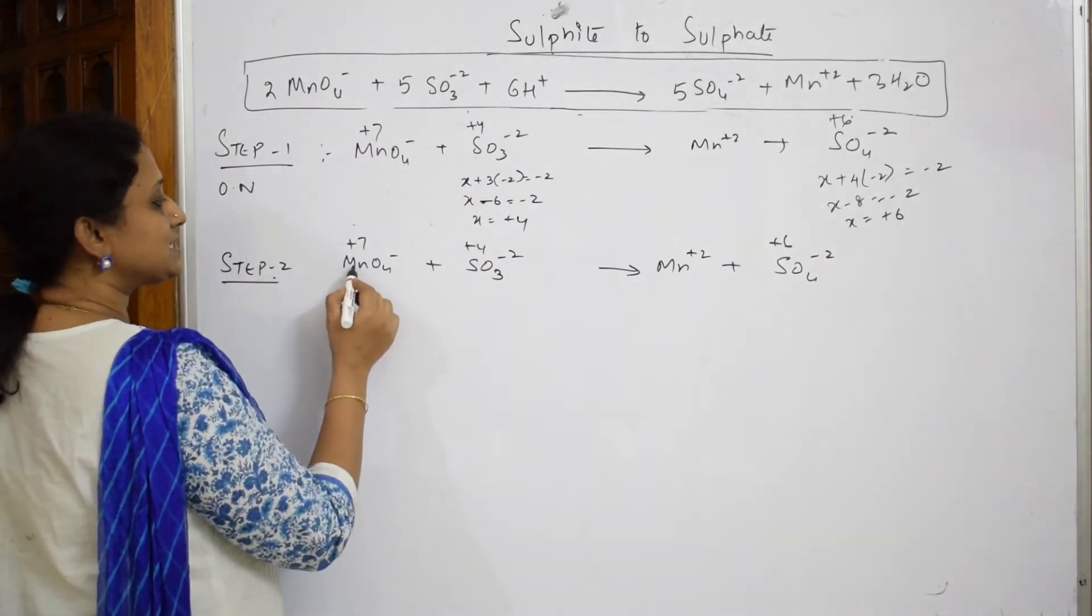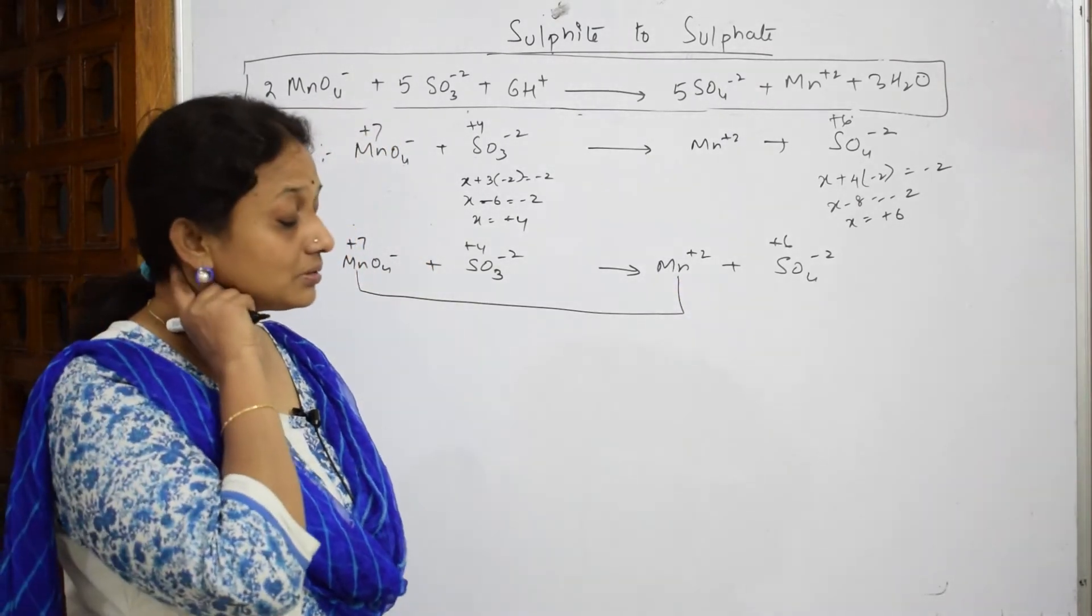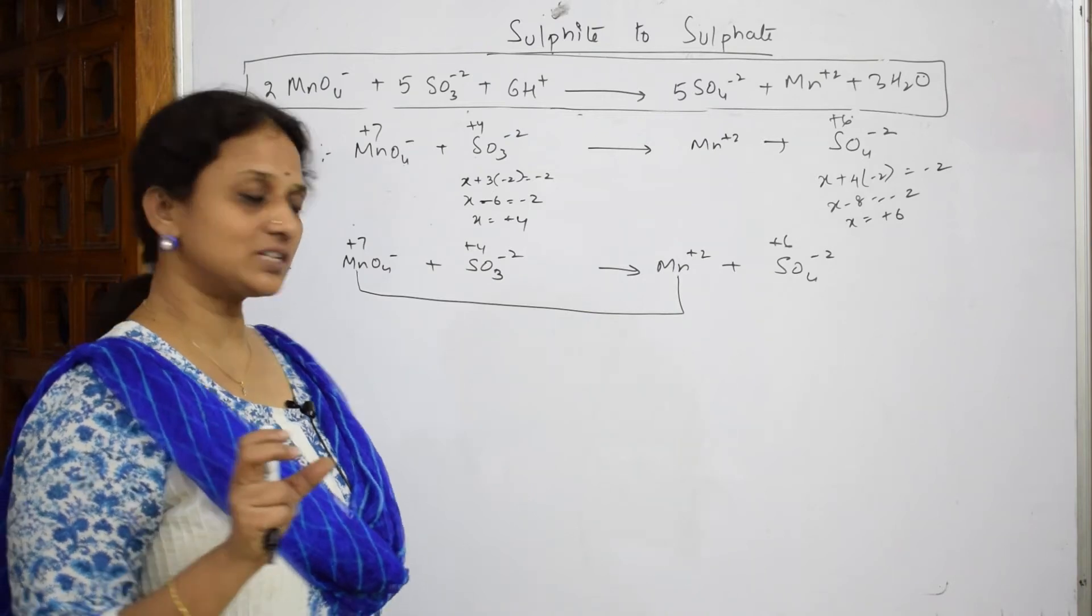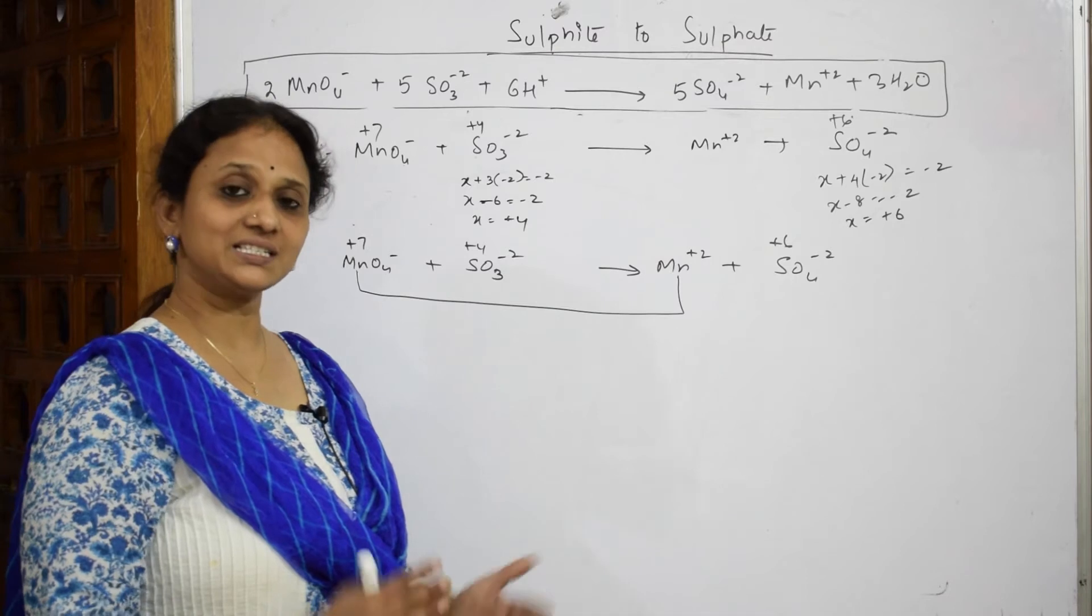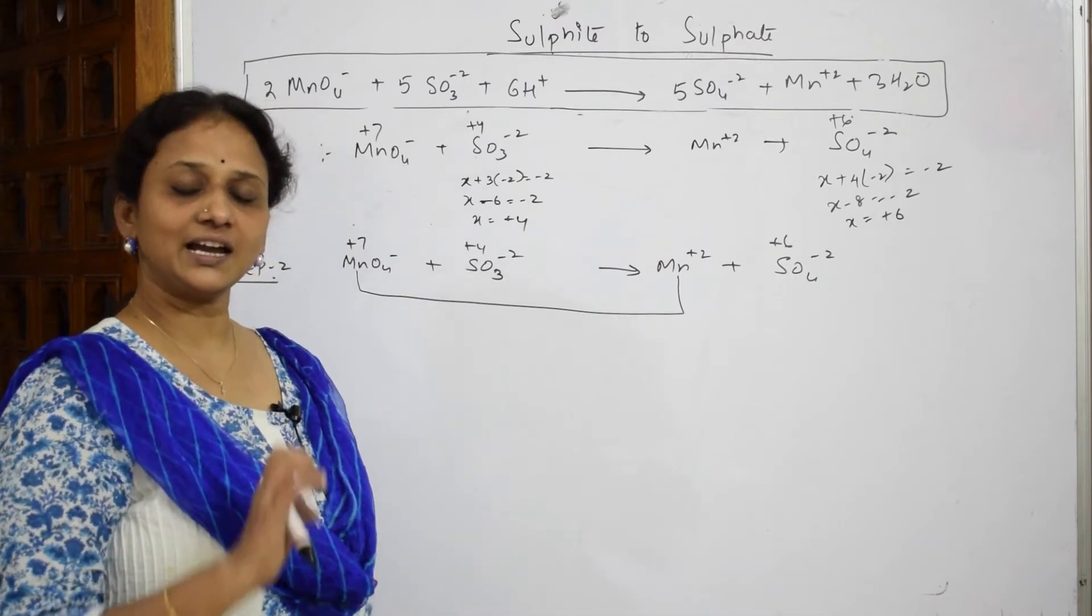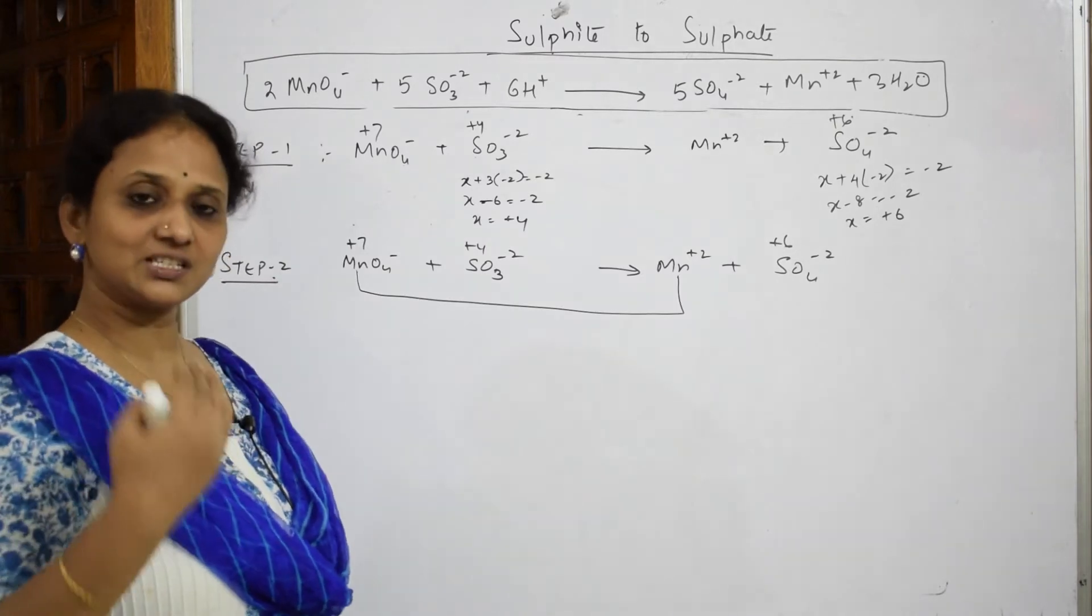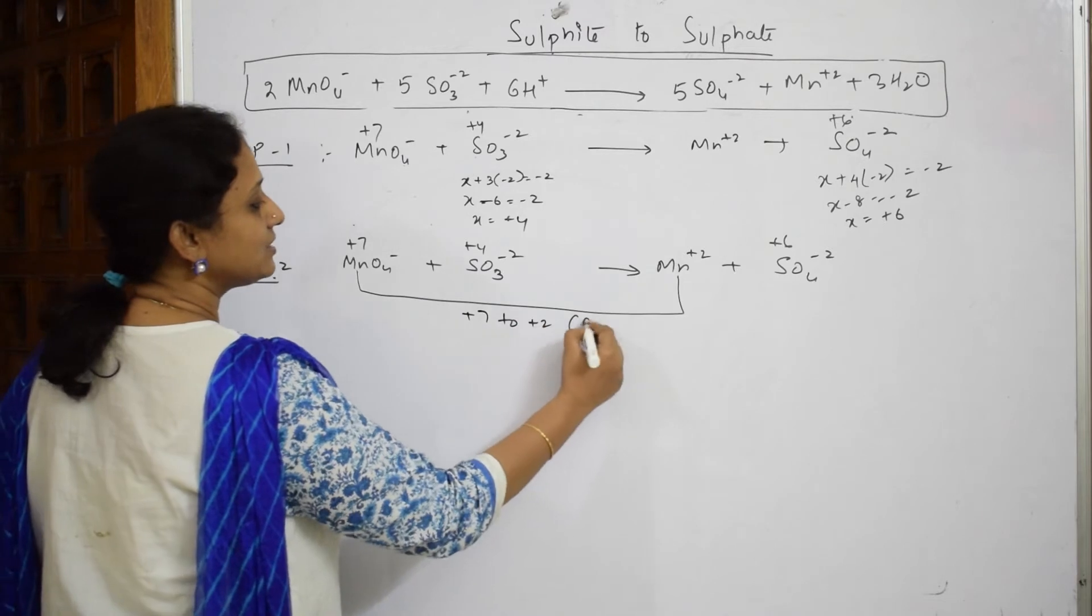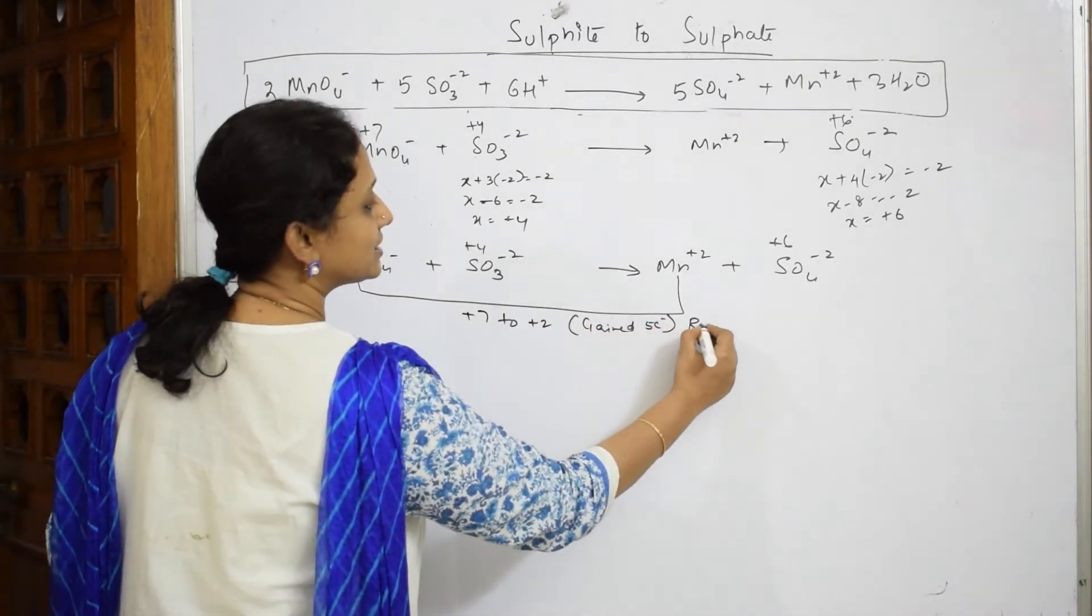Manganese from plus 7 its oxidation state has come down to plus 2. The number value has come down. But in the process from higher value to lower value when it is going, that means it has gained 5 electrons. From 7 to 2, 5 electrons it has gained, and from plus 7 to plus 2 it has gained 5 electrons. Those 5 electrons I call it as reduction, gaining.